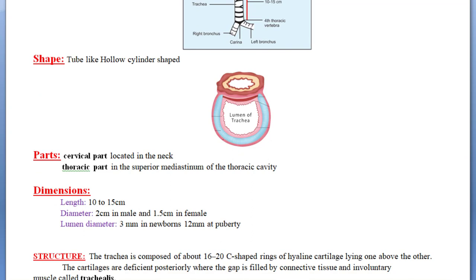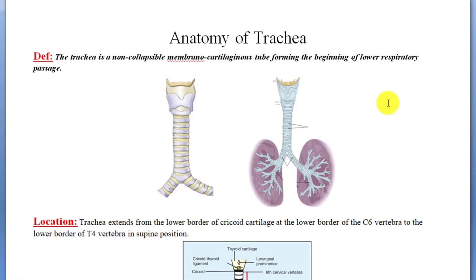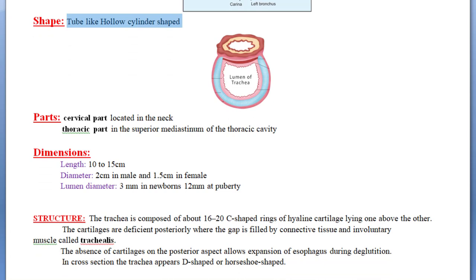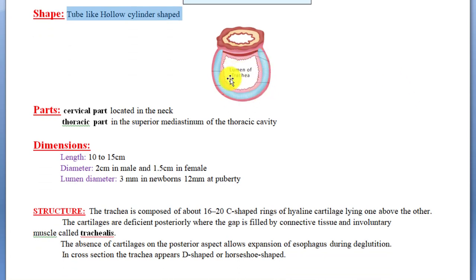What is the shape of the trachea? It is a tube-like hollow cylinder in shape. Inside the lumen is completely empty. The trachea has a lumen, surrounded by cartilaginous rings, and behind it is the trachealis muscle.